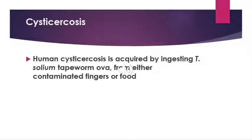In patients with massive numbers of parenchymal cysts, an intense immune response with diffuse edema can cause a clinical picture resembling encephalitis. Manifestations may include seizure, headache, nausea, vomiting, impaired consciousness, reduced visual acuity, and sometimes fever. Many cases of parenchymal cysticercosis are asymptomatic and are identified incidentally via radiographic imaging performed for other reasons.